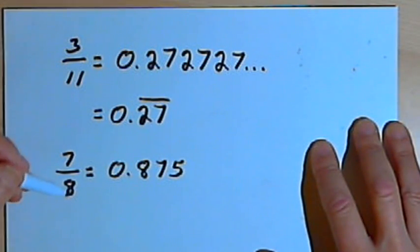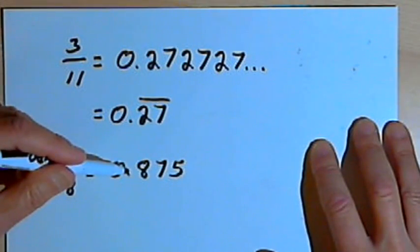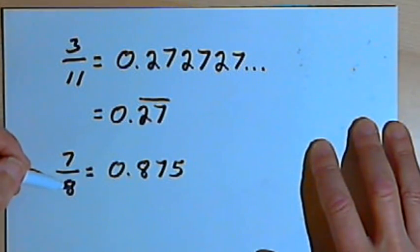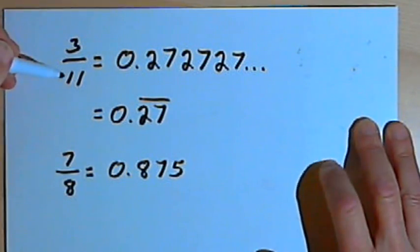If the denominator has no prime factors other than 2 and 5, then you're going to have a terminating decimal. In other words, if all you have is 2s, or 5s, or 2 and 5s, then you'll get a terminating decimal. Otherwise you'll get a repeating decimal.